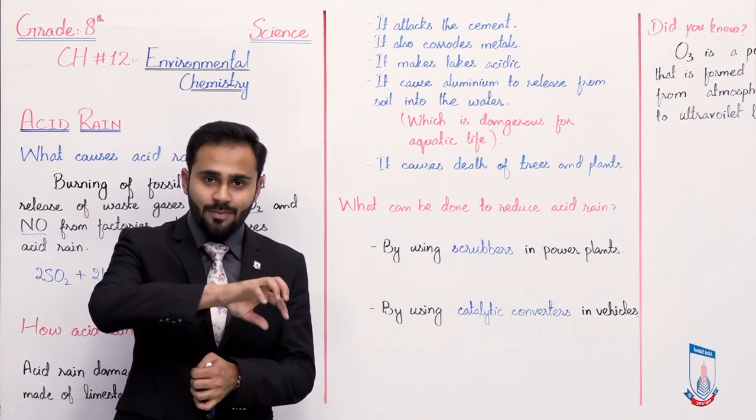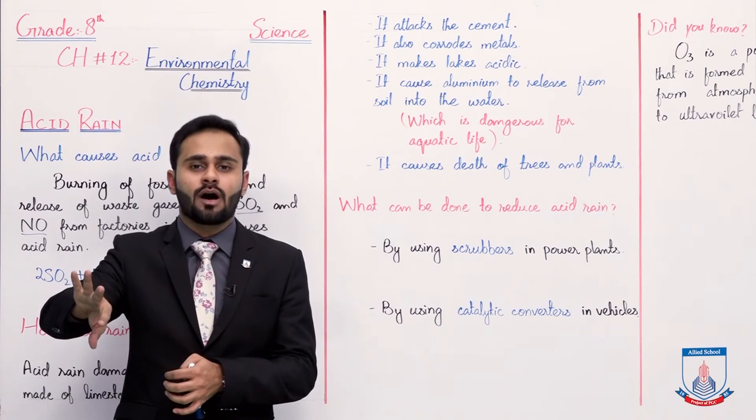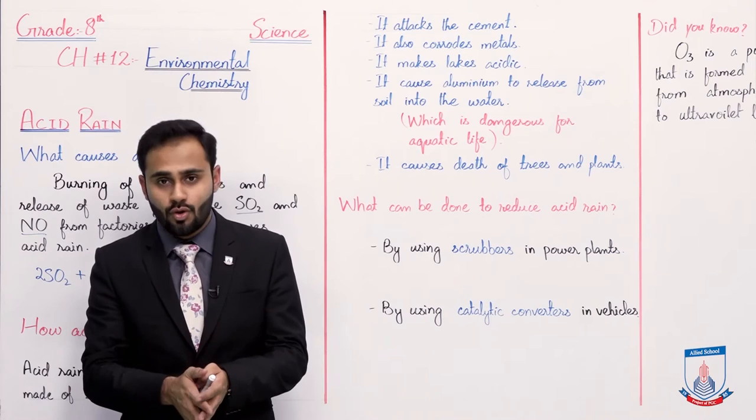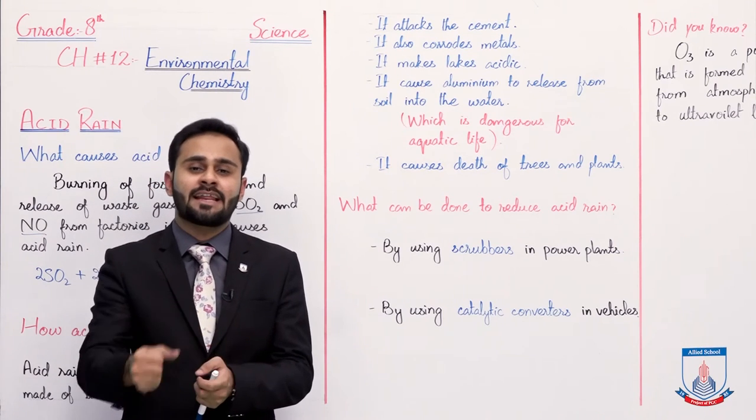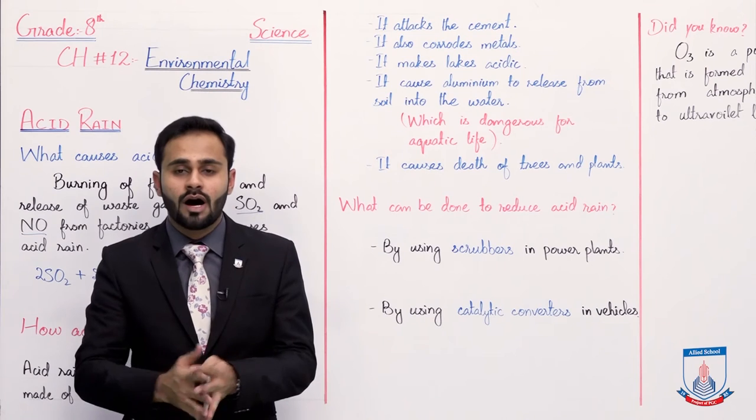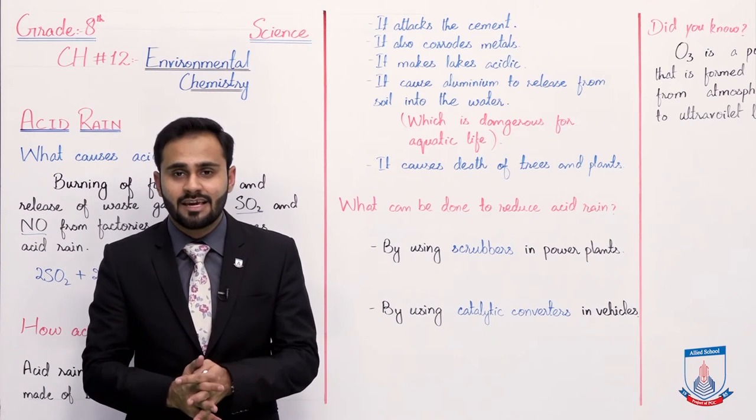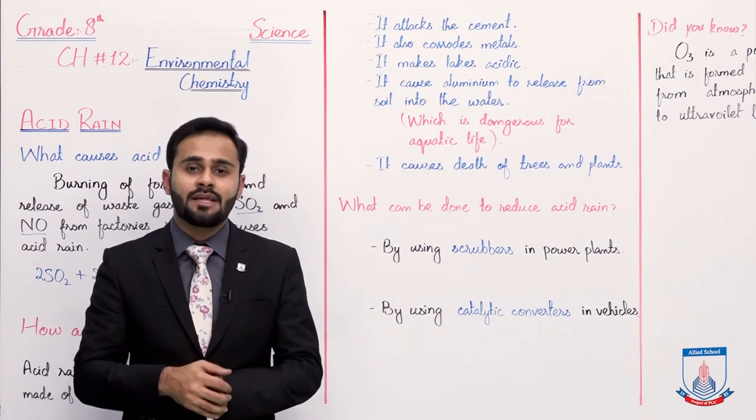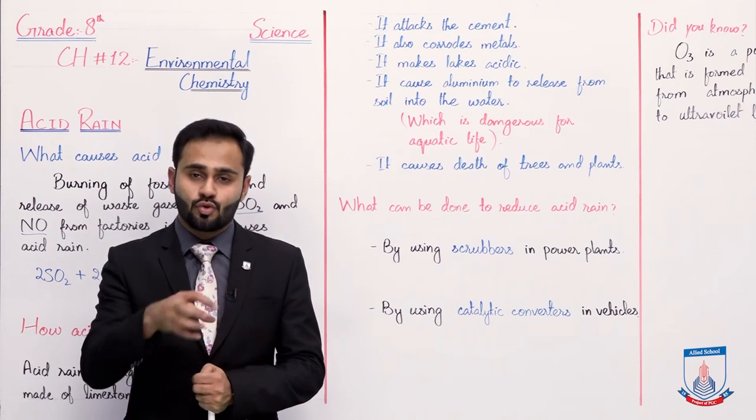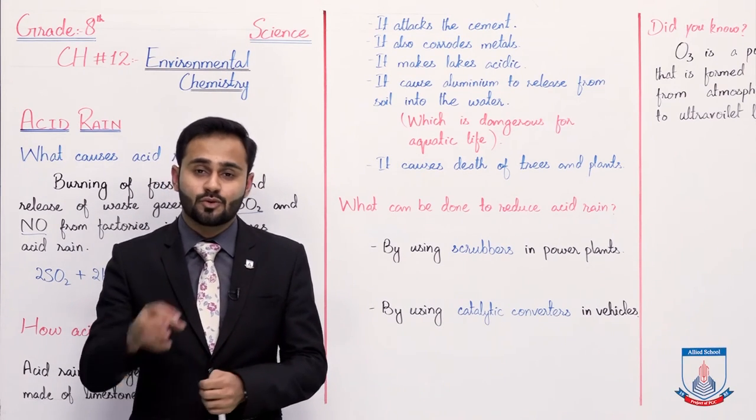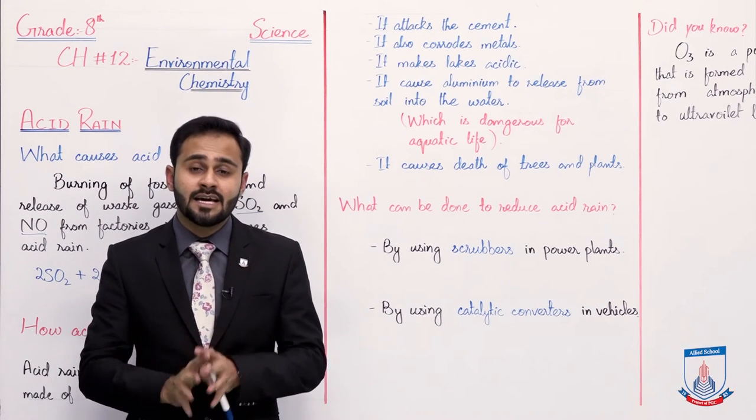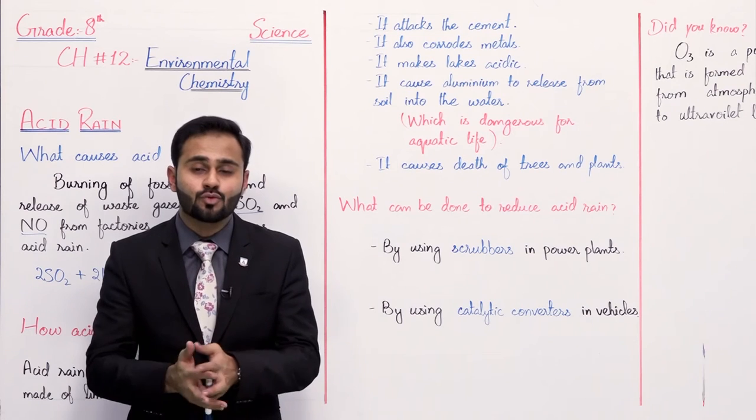Now that aluminum, if it enters the lakes, let's suppose there are fishes in the lakes. The fishes present there, as soon as they eat that aluminum, those fishes will also die, their death will occur. In this way, if some bird eats that, obviously that bird will also die. So in this way your aquatic life also gets disturbed.